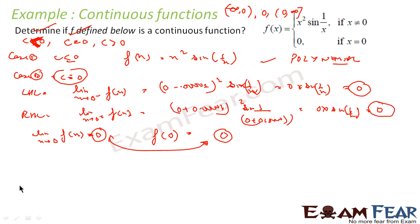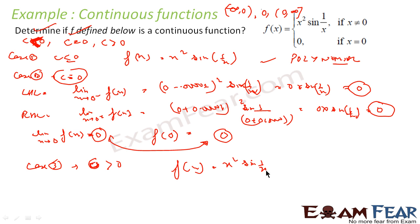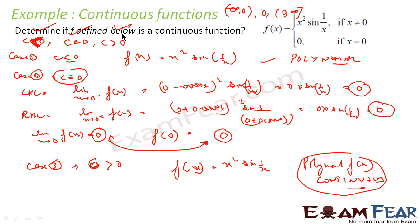So the function is continuous in both these cases. For case 3, c is greater than 0, my function is f(x) equal to x squared sin(1/x). This is also a polynomial function, so it is continuous. We can say the whole function is continuous because we could not find a single point where this function is not continuous.